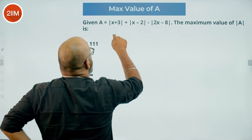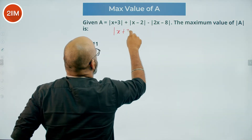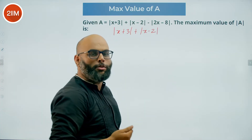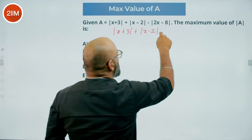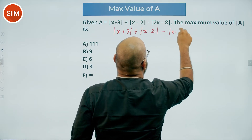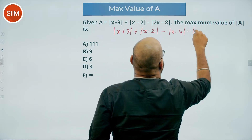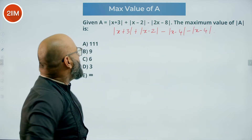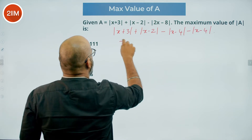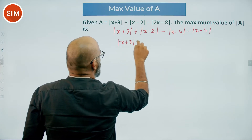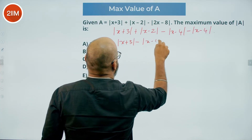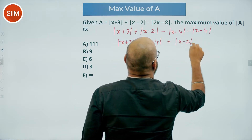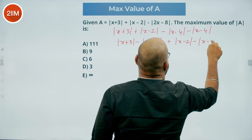We'll have mod of x plus 3 plus mod of x minus 2. I'm writing 2x minus 8 as 2 times mod of x minus 4, which gives mod of x minus 4 minus mod of x minus 4. So I'm rewriting this as: mod of x plus 3 minus mod of x minus 4 plus mod of x minus 2 minus mod of x minus 4.